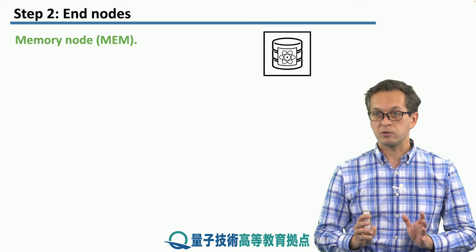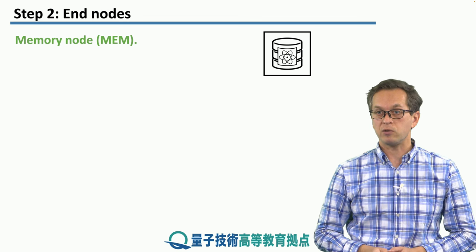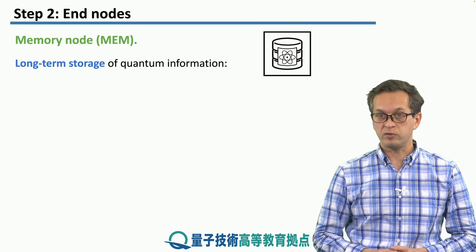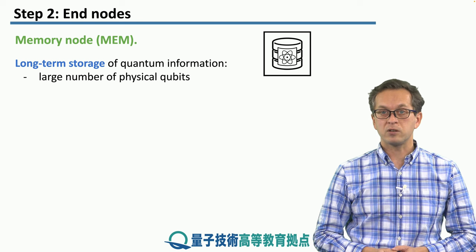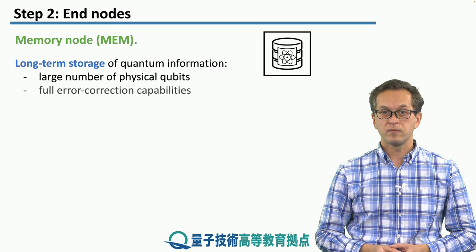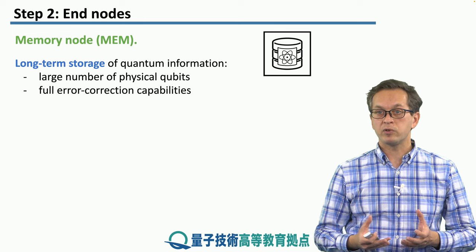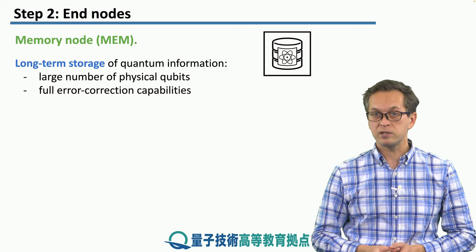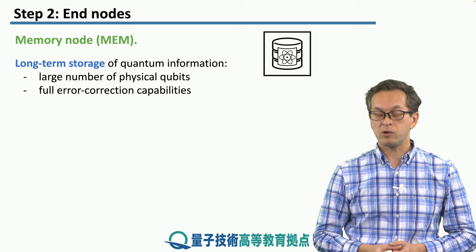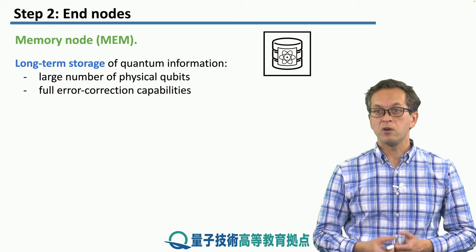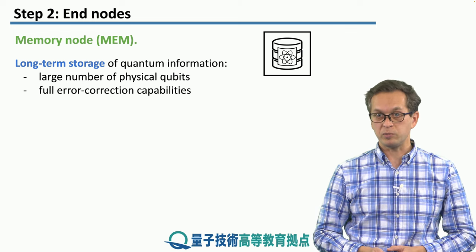The main job here is just to accept information, and store it for as long as possible. So this is long-term storage of quantum information. And it's got a large number of physical qubits, and full error-correcting capabilities. In order to produce very long coherence times, and in order to keep the quantum information intact, we need very large error-correcting codes, which again require a large number of physical qubits.